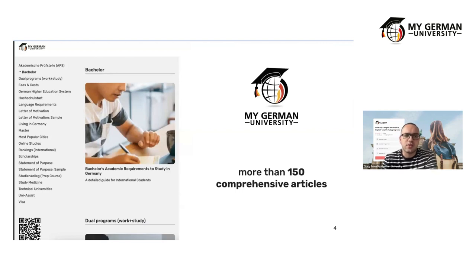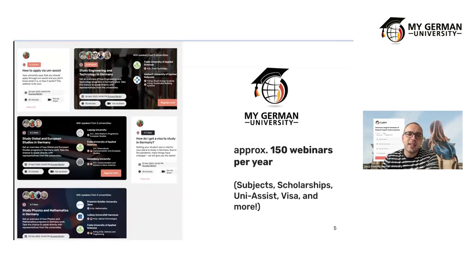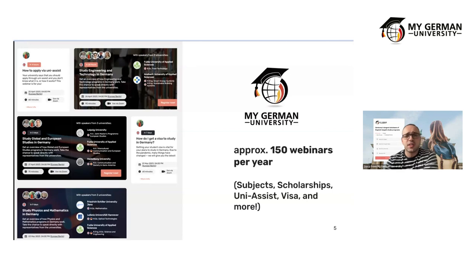We also help through over 150 comprehensive articles on various topics related to studying in Germany — APS requirements for students from China, India, and Vietnam; writing motivation letters and CVs; visa issues like blocked accounts; and studying medicine in Germany. All of this is available for free. Additionally, we organize approximately 150 webinars per year on topics including scholarships, Uni-Assist, visa issues, and subject-specific webinars like today's on economics, political science, engineering, and biology.